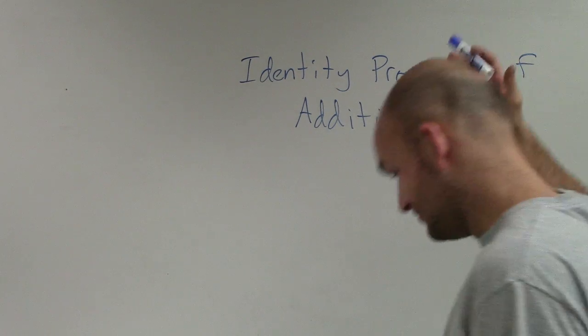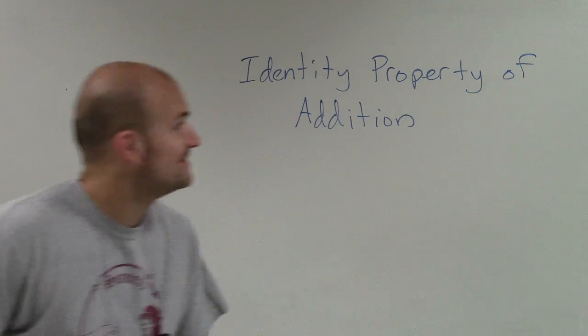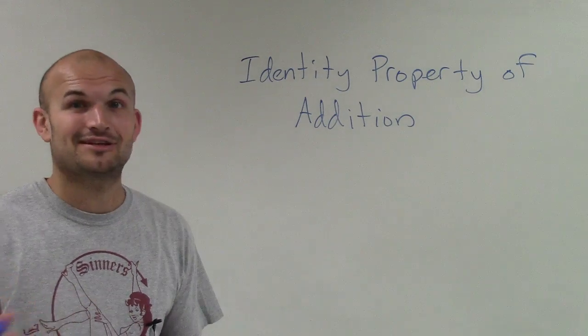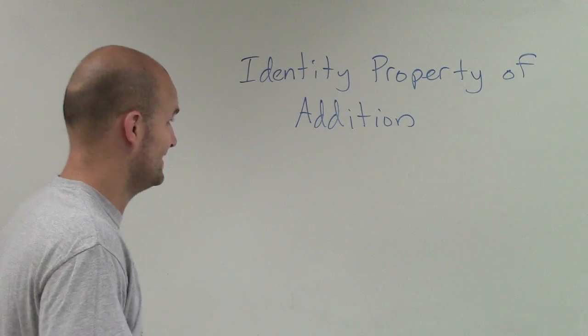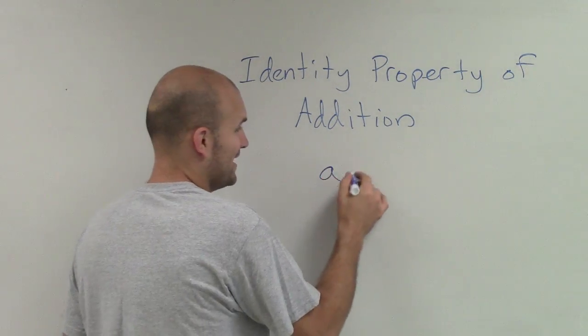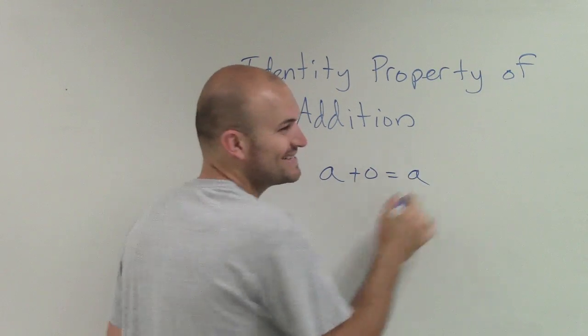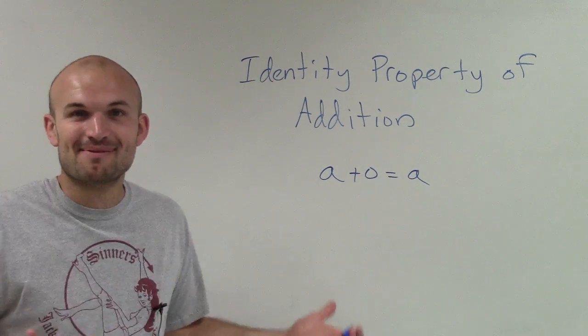The identity property of addition very simply goes like this: a plus zero equals a. And that's pretty much it.